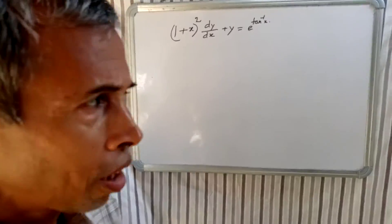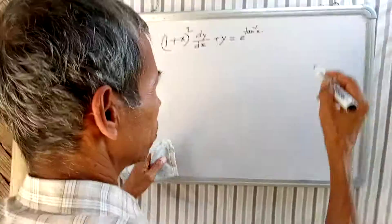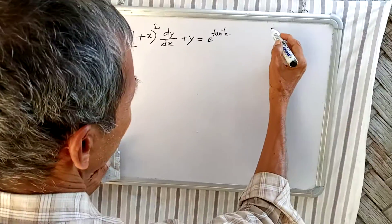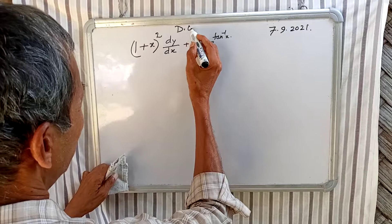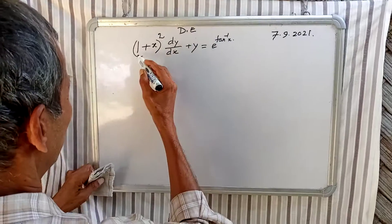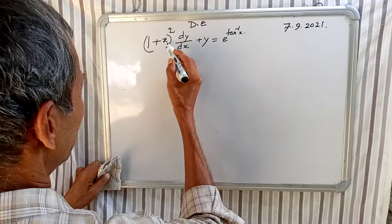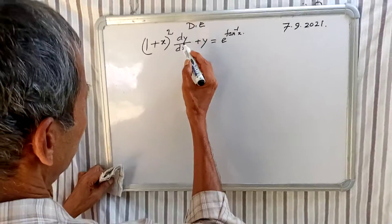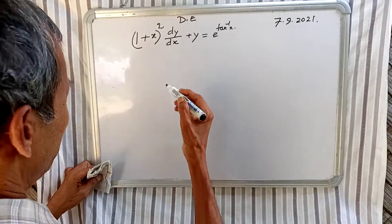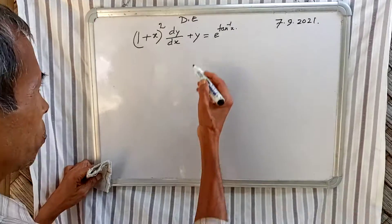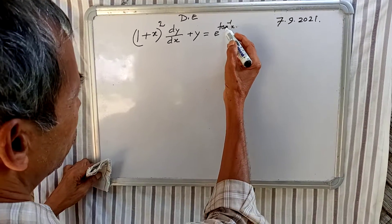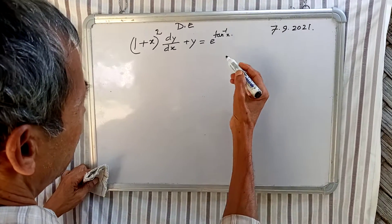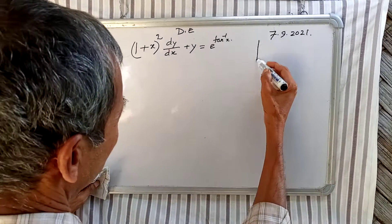Om Paddanabhaya Namah. The equation is: (1 + x²) dy/dx + y = e to the power tan inverse x.